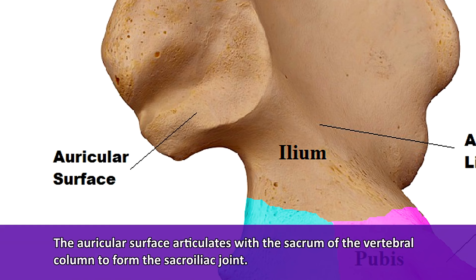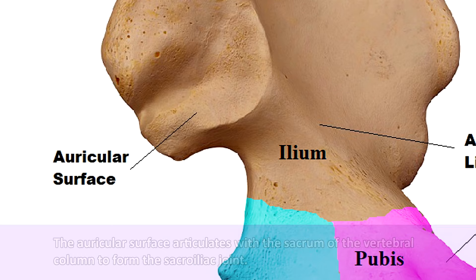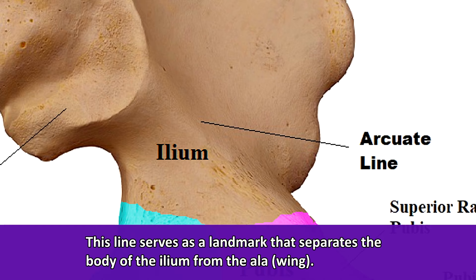The auricular surface is on the medial side of the posterior region of the ilium, and it articulates with the sacrum of the vertebral column to form the sacroiliac joint. Finally, there is a prominent line on the medial side that extends from the auricular surface down to the pubis called the arcuate line, which serves as a landmark separating the body of the ilium from the ala or wing of the ilium.